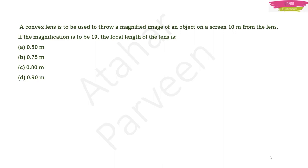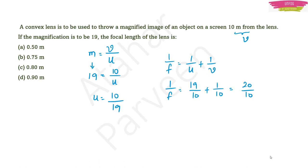Question: A convex lens is used to draw a magnified image on a screen 10 m from the lens. If magnification is 19, the focal length of the lens is? Image distance V = 10 m. Magnification m = V/U = 19, so U = 10/19 m. Using 1/f = 1/V − 1/U: 1/f = 20/10 = 2, so f = 0.5 m — option A.